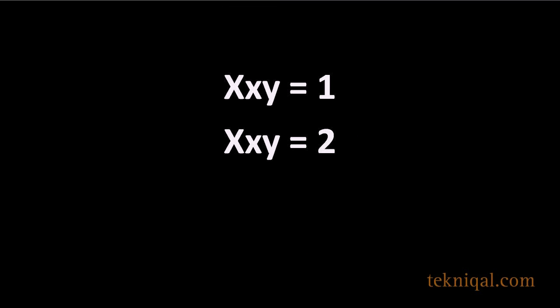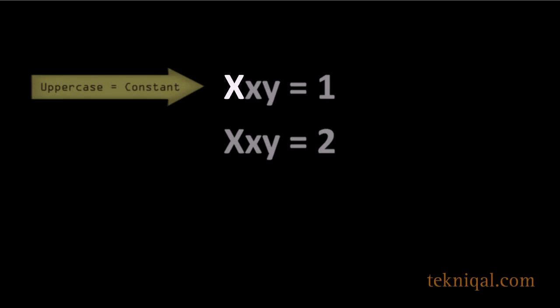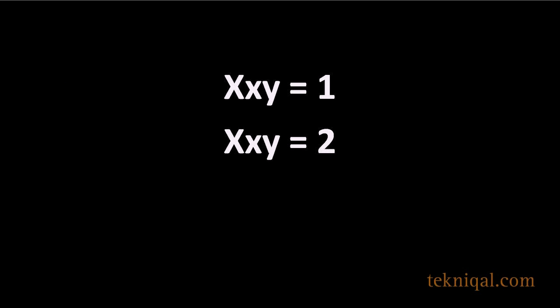Constants are a type of identifier that represent values that we don't want to change throughout the life of the program, and we use an uppercase letter to indicate that we're defining a constant. This XXY value will generate an interpreter warning when we try to reassign it to the value 2.